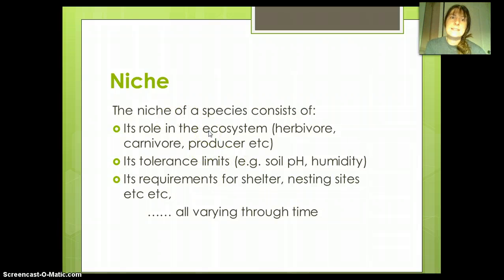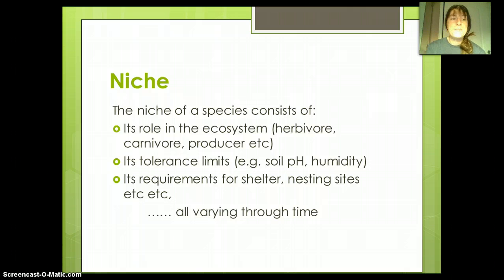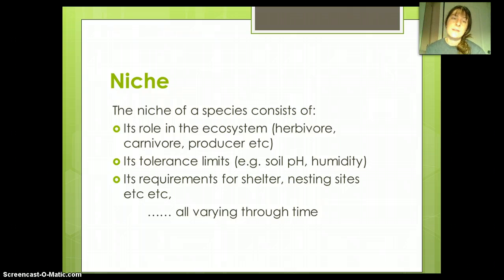The niche of a species consists of a bunch of different things: its role, its tolerance limits, its requirements for shelter — all of those different things also vary through time. In order for an organism to live in a certain area, it has to live in a place where it's supported by the environment.